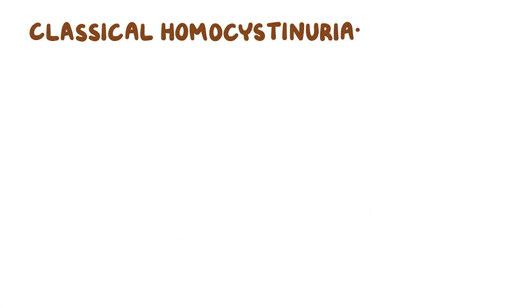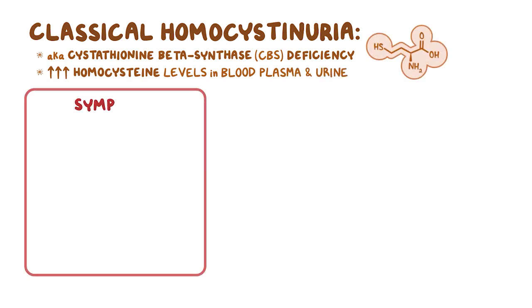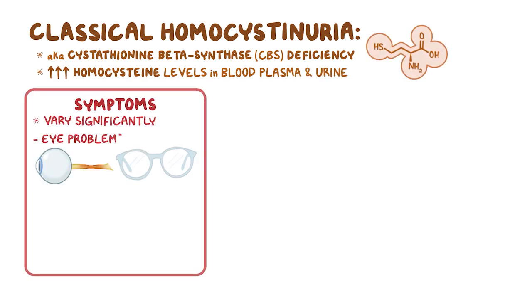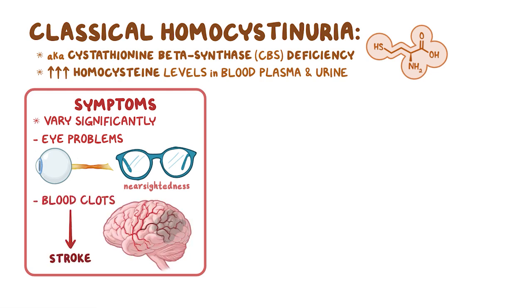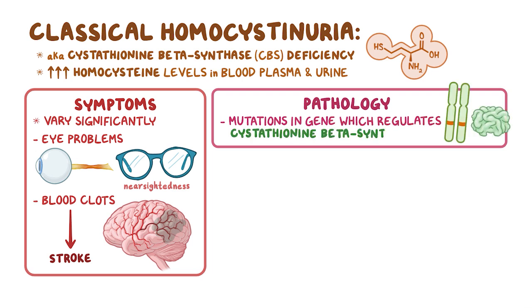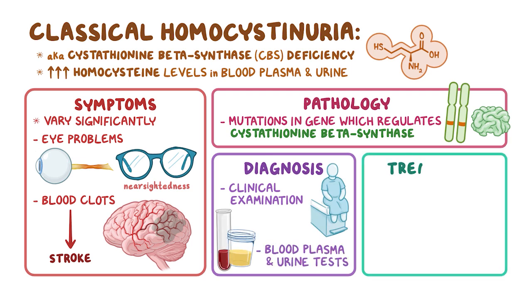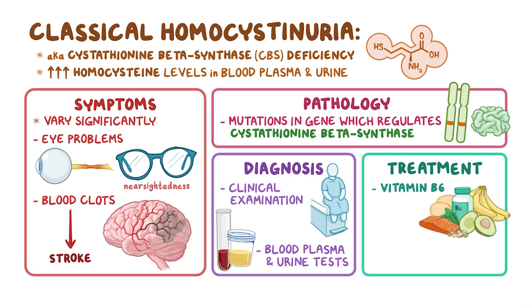As a quick recap: classical homocystinuria, also called cystathionine beta-synthase deficiency, causes increased homocysteine levels in blood plasma and urine. Symptoms vary significantly and often cause eye problems such as nearsightedness, and in severe forms can cause blood clots leading to stroke. CBS is caused by mutations in a gene which regulates cystathionine beta-synthase. Diagnosis includes a clinical examination followed by specific blood plasma and urine tests. The primary treatment is vitamin B6, but other treatments such as betaine and a low-protein diet might also be needed.